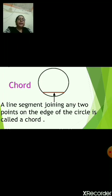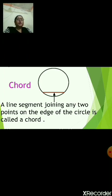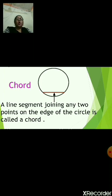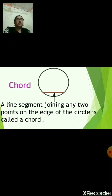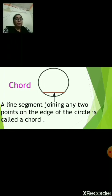Now, the second part is chord. What is a chord? A line segment joining any two points on the edge of the circle is called a chord. Chord is shown with a red line drawn. So, chord is a line segment joining any two points on the circle. Remember the definition.